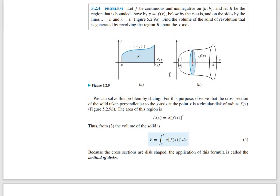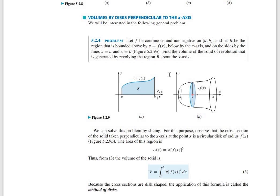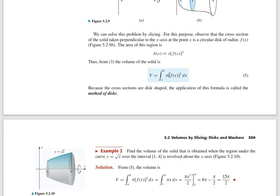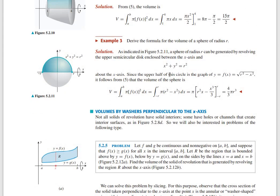What is the disc method? It involves a curve. We will start with a strip, and the strip will touch the axis of revolution. We will distinguish between the disc method and the washer method based on whether the strip touches the axis.